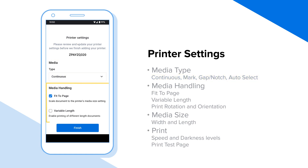Media handling: if you select continuous media, you will get the variable length option. By choosing the variable length option, the user does not have to change the media length setting before printing each size document.